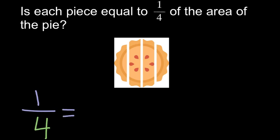The one in the fraction, the numerator, represents a number of pieces. So here, one piece, one piece of pie.